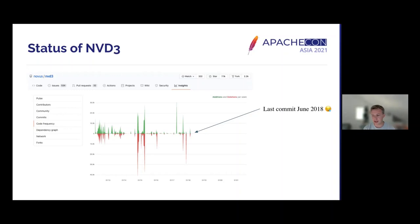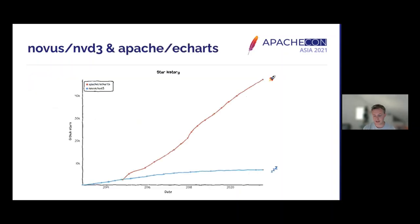The problem was that as the demand got bigger, NVD3 started slowing down. This is a chart from the NVD3 GitHub page showing commit frequency — and as you can see, it completely stops in mid-2018. The project essentially stopped accepting PRs and stopped doing new releases at that time. Meanwhile, Apache eCharts was gaining some crazy momentum. It was becoming obvious to everyone that we needed to move away from NVD3.